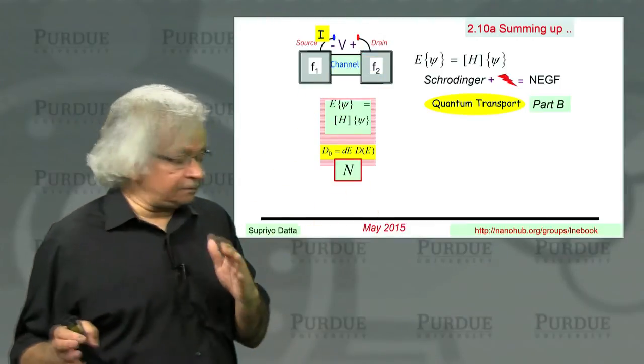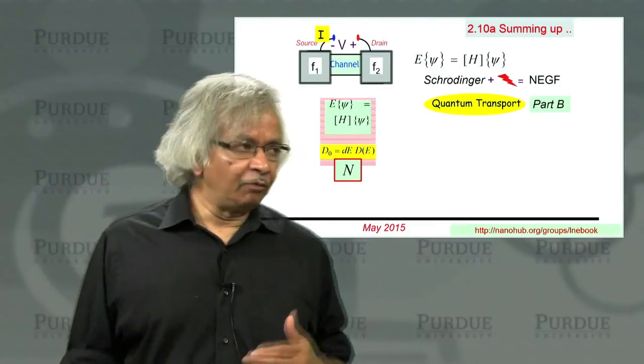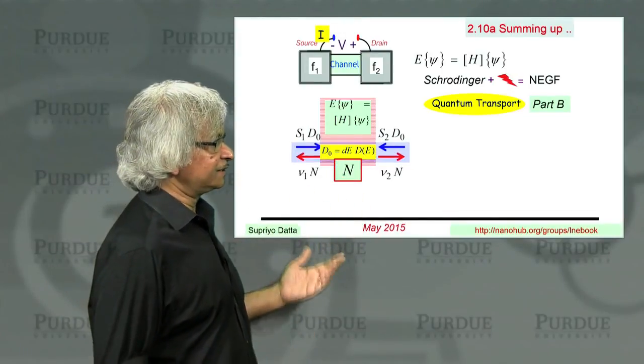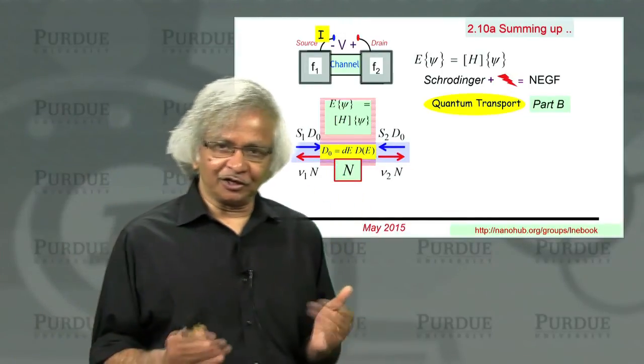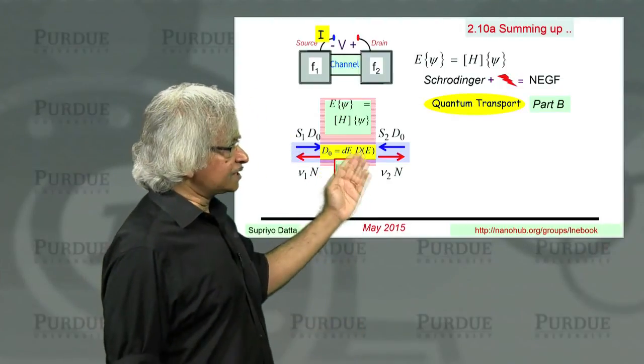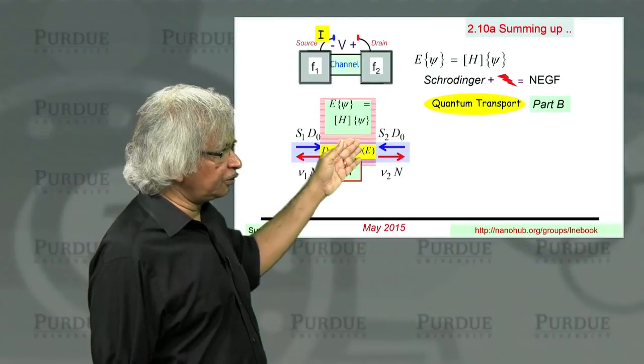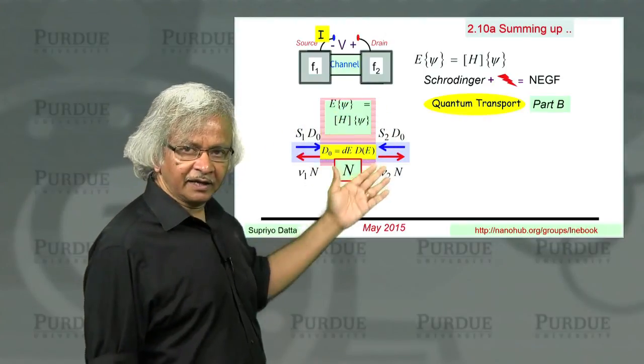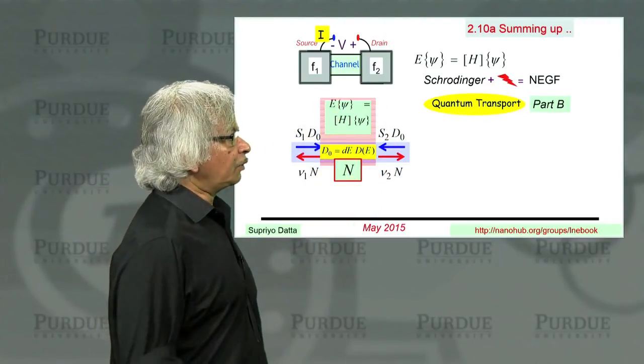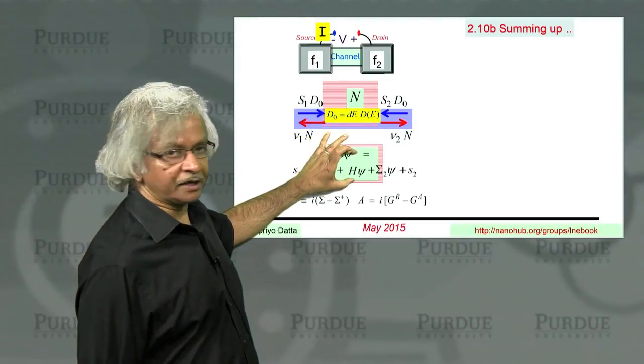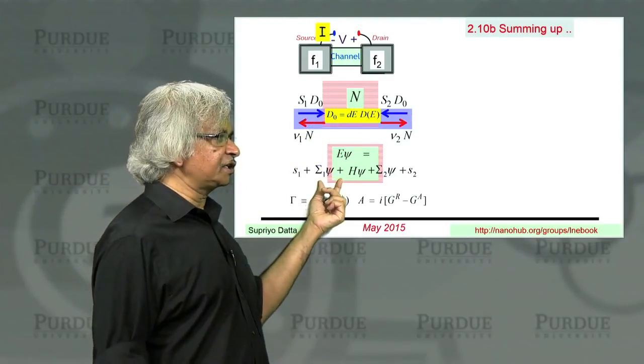Our purpose in this unit was to add this flow process, the contacts - that's why we call this contacting Schrodinger. The process that involves this outflow of electrons and inflow of electrons from the contacts.